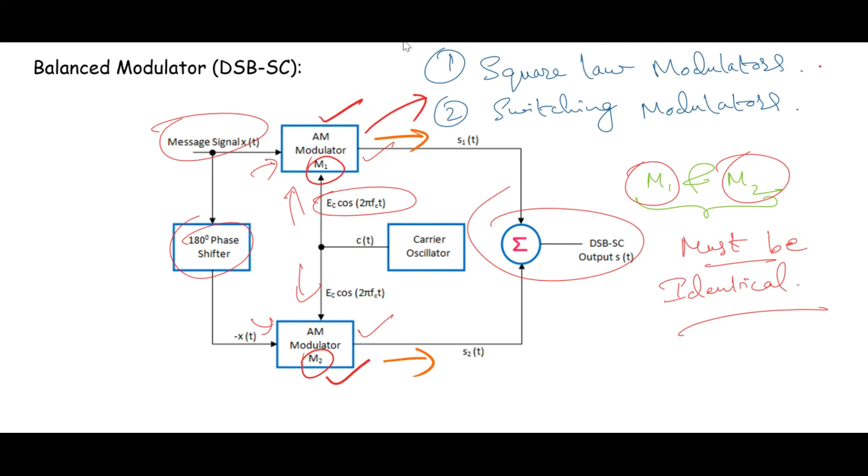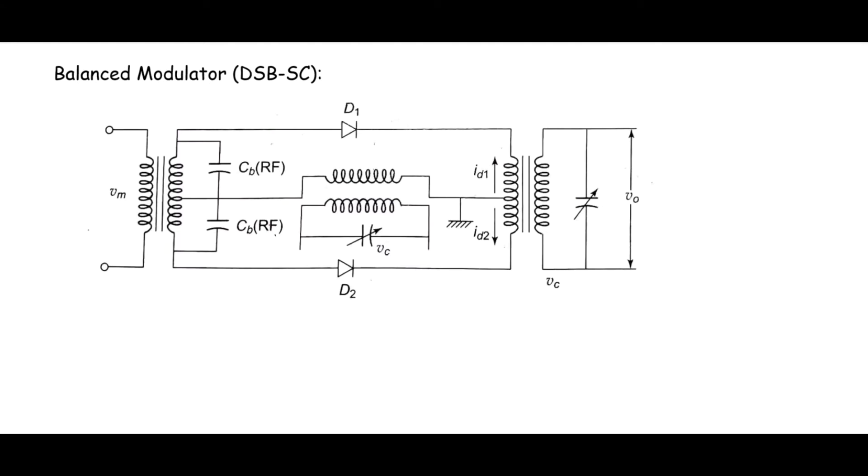For better understanding of this, let us consider a circuit. Here is the simplest circuit possible for balanced modulator where modulation is being performed by these diodes D1 and D2. Herein VM is the message signal and VC is the carrier signal. From our last discussion we know that VC is fed in phase to both the diodes whereas VM is fed 180 degrees out of phase. Due to which we will observe these currents ID1 and ID2 acting 180 degrees out of phase with each other.